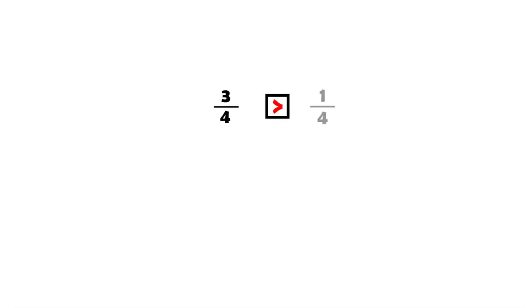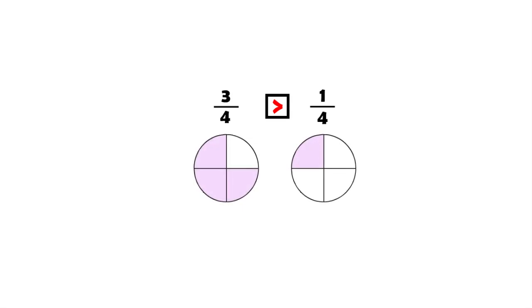As you know, a fraction is greater than another fraction if it represents a bigger chunk of the same whole. And if two fractions are divided into the same total number of equal parts, then we say these two fractions have the same denominator, and the greater fraction is the one with the greater numerator.